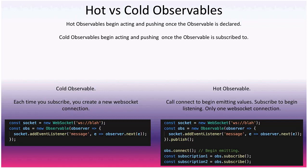In cases like that, a hot observable makes more sense. The publish function converts a cold observable to a hot one, and calling observable.connect is effectively the same as the first subscribe call. Additional subscriptions then just start listening without re-executing the setup. But once you call connect it starts firing whether or not anyone is listening, so you may miss early emissions.